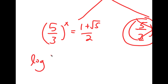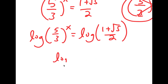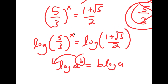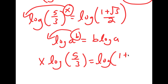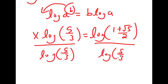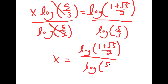To solve this, I'm going to start by taking the log on both sides. So I have log of 5 over 3 to the power of x is equal to log of 1 plus the square root of 5 over 2. If I have something in the form log a to the power b, I can move b to the front, so it equals b times log a. So I can move x to the front: x times log of 5 over 3 is equal to log of 1 plus the square root of 5 over 2. Dividing both sides by log of 5 over 3, I get x is equal to log of 1 plus the square root of 5 over 2, divided by log of 5 over 3.